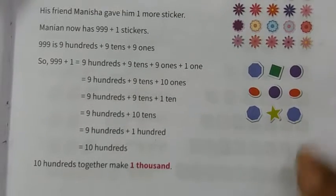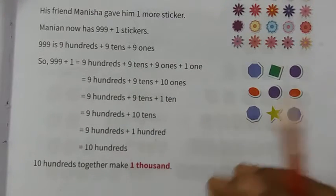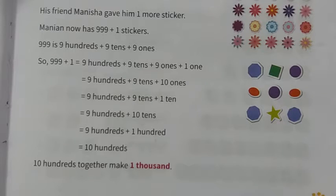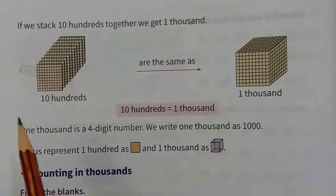900 plus 100 is equal to 1000. We can say that 10 hundreds means 1 thousand.